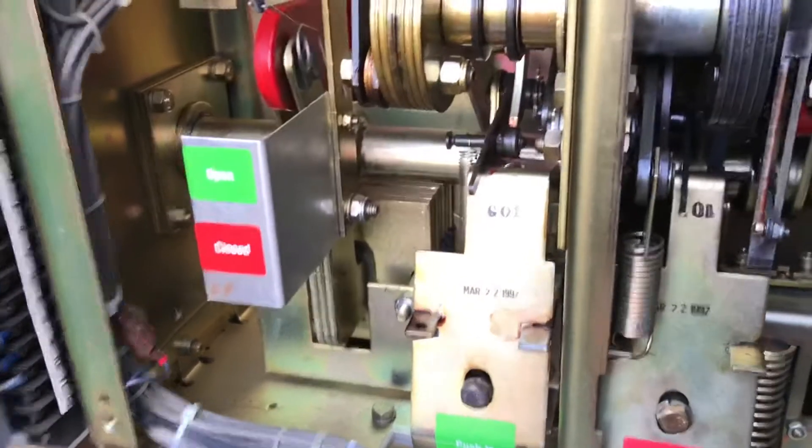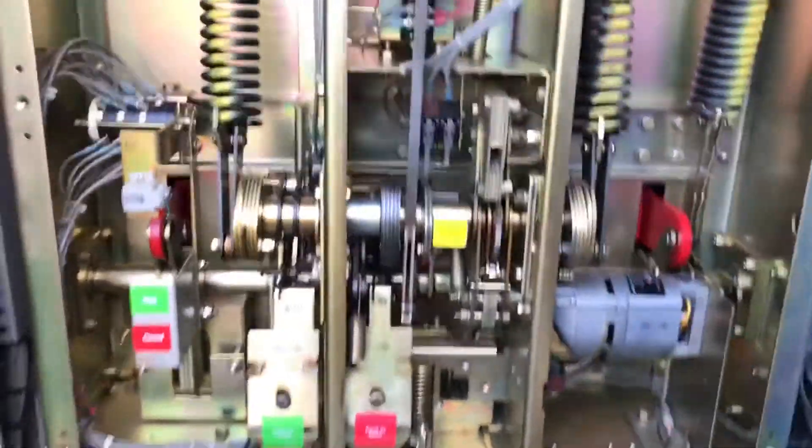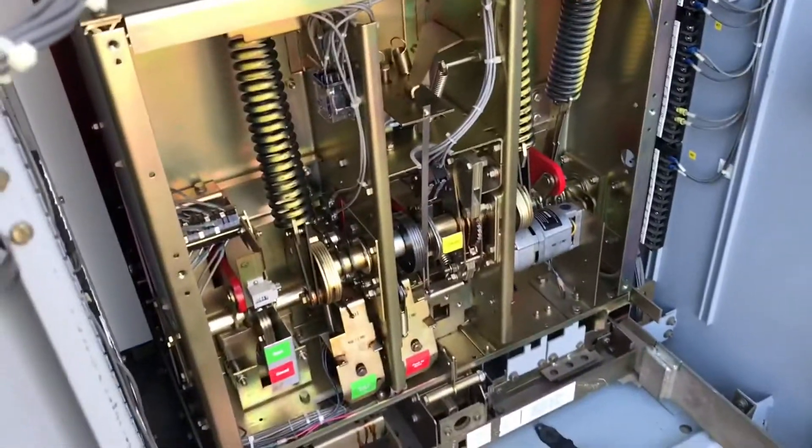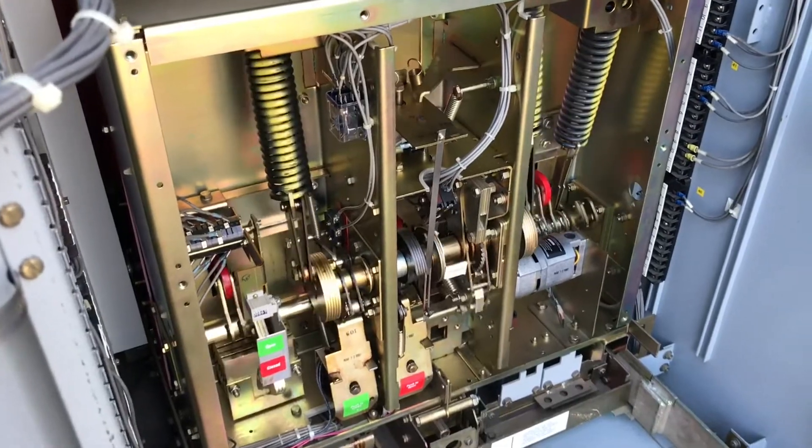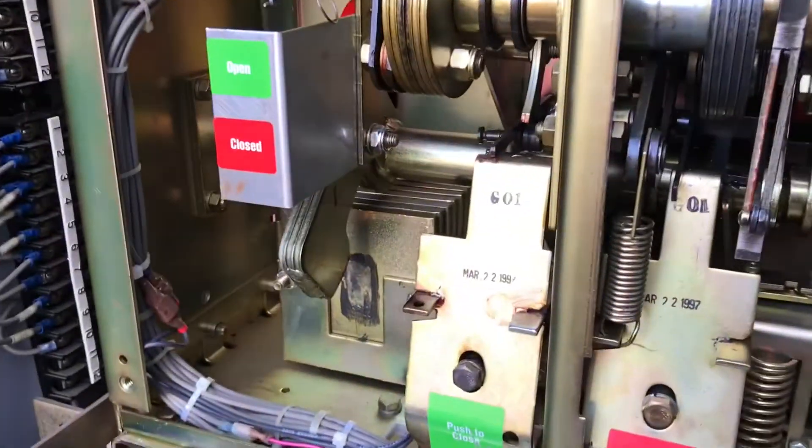And now the breaker is open again. It's fully charged and we'll go through this again. Come back to the control switch on the door, I'm going to turn the switch, breaker is closed again, and the springs are recharged.